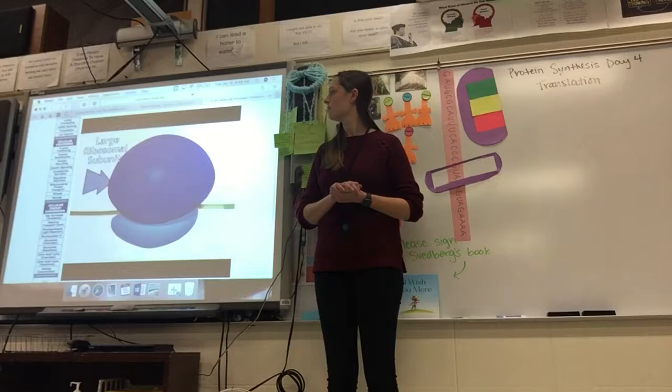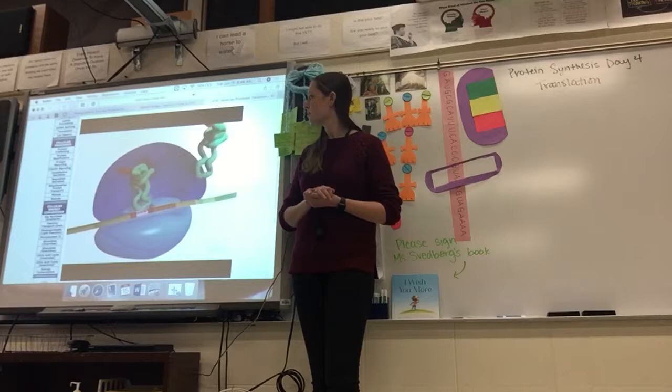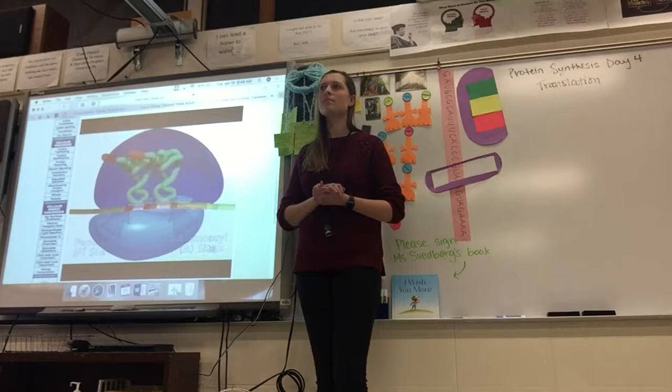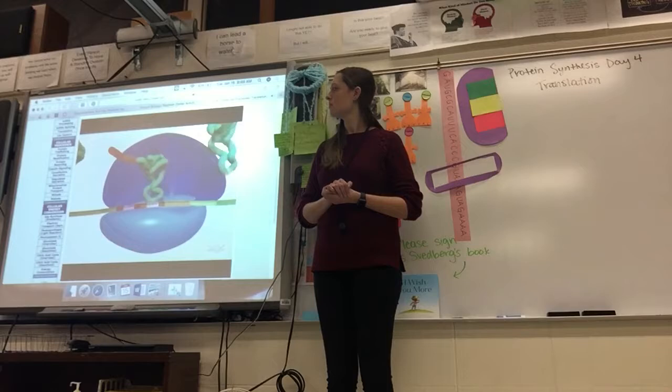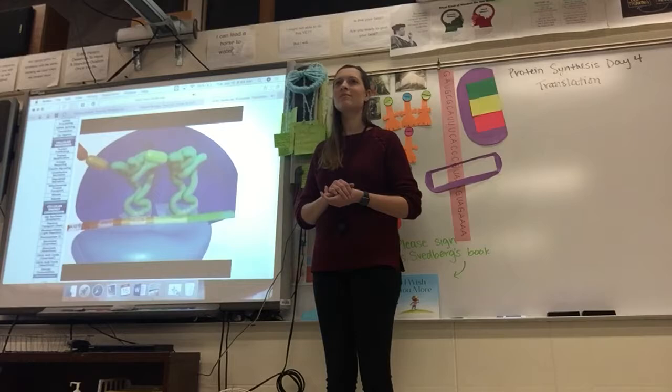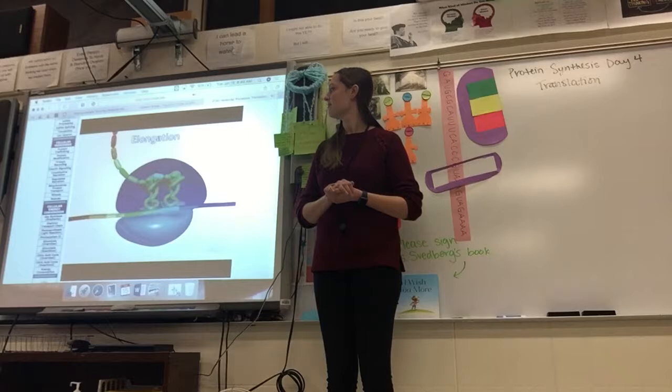The large subunit of the ribosome binds to create the peptidyl or P-site and the aminoacyl or A-site. The first tRNA occupies the P-site. The second tRNA enters the A-site and is complementary to the second mRNA codon. The methionine is then transferred to the A-site amino acid. The first tRNA exits the ribosome, the ribosome moves along the mRNA, and the next tRNA enters — it's like a rainbow!